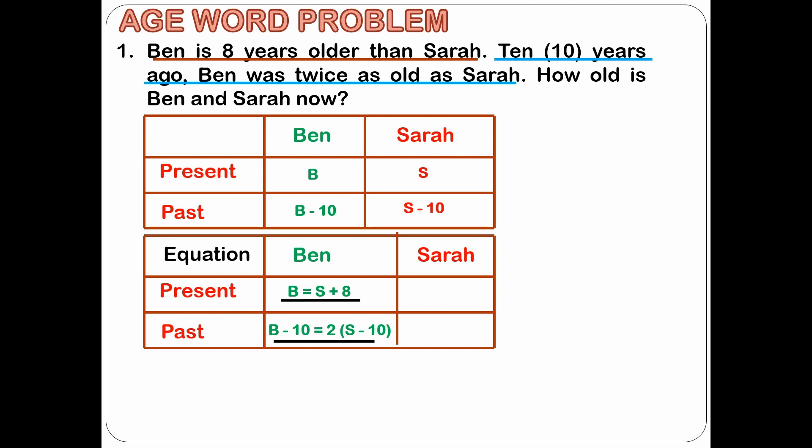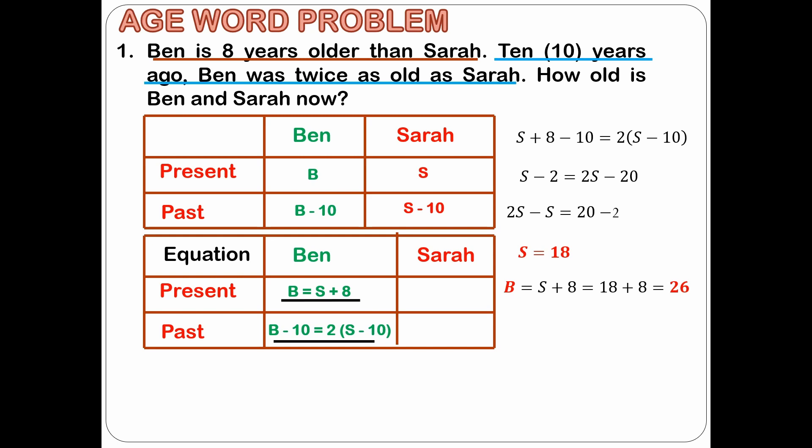Let's use substitution. We will substitute S plus 8 for B. The equation will become S plus 8 minus 10 is equal to 2S minus 10. Now we're left with only one variable and that is for Sarah. After simplifying the equations, we get S is equal to 18. Now solving for Ben's age, we get B is equal to 26.